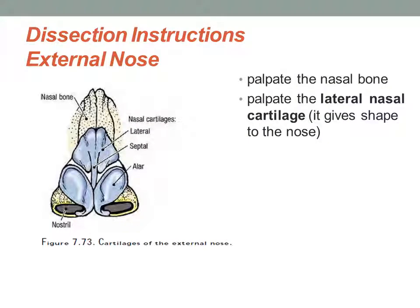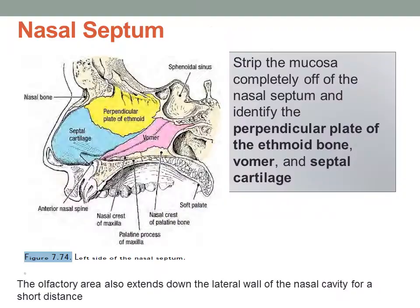For the dissection, we're going to start on the external nose. You're going to palpate your nasal bone and then palpate the lateral nasal cartilages, which are the ones that give it its shape. To dissect the nasal septum, best is to strip off the mucosa off of the septum completely, and then you should be able to identify your perpendicular plate of the ethmoid, the septal cartilage, and the vomer.